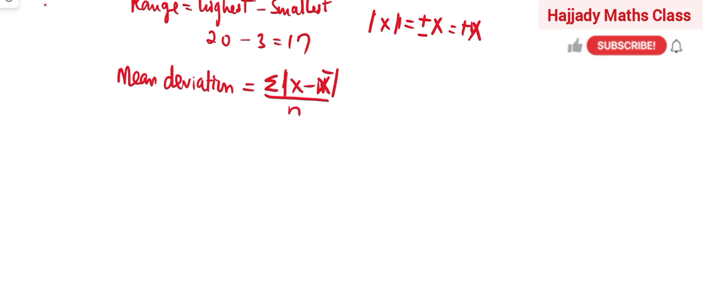So our observation is 3, 4, as we have up there, 8, 9, 16, and 20. We are going to consider calculating the mean deviation.